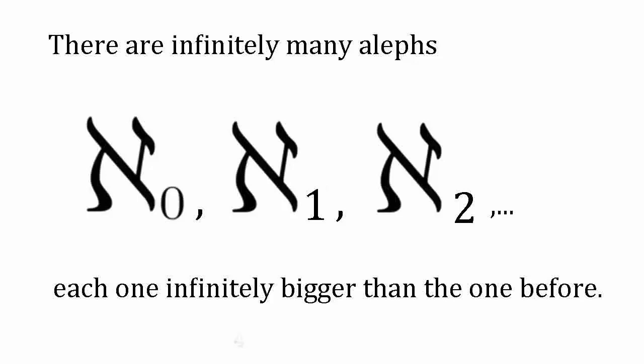Infinitely bigger than Aleph Null is Aleph 1. Infinitely bigger again is Aleph 2, and so on. Alephs come in infinitely many sizes. Not only that, but corresponding to each Aleph, are infinitely many other infinite numbers, a fact that leads us to consider the difference, in the realm of the infinite, between cardinals and ordinals.